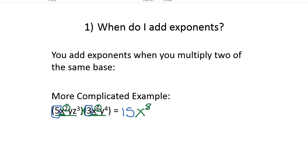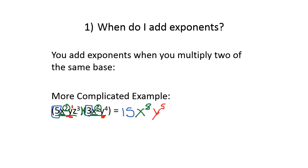Once we finish with the x's, we look at our y's. We have y and y to the fourth. If no exponent is written, the exponent is understood to be one. So it's y to the first times y to the fourth, which is y to the one plus four, or y to the fifth. For the last variable z, we have z to the third in the first set of parentheses and no z's in the second set, so we just write z to the third.